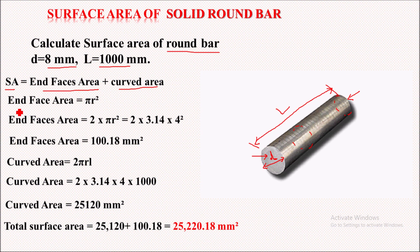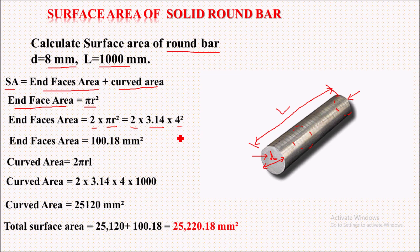First we will calculate the end face area. The end face area is the area of a circle given by πR². Since there are two faces, end faces area = 2 × πR² = 2 × 3.14 × 4² . Here the diameter is 8 mm, so the radius is 4 mm. The end face area equals 100.48 square mm.